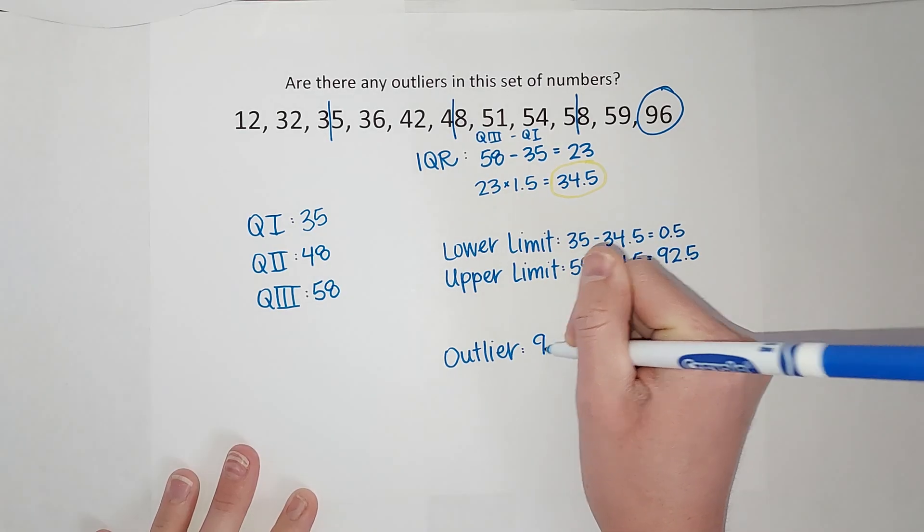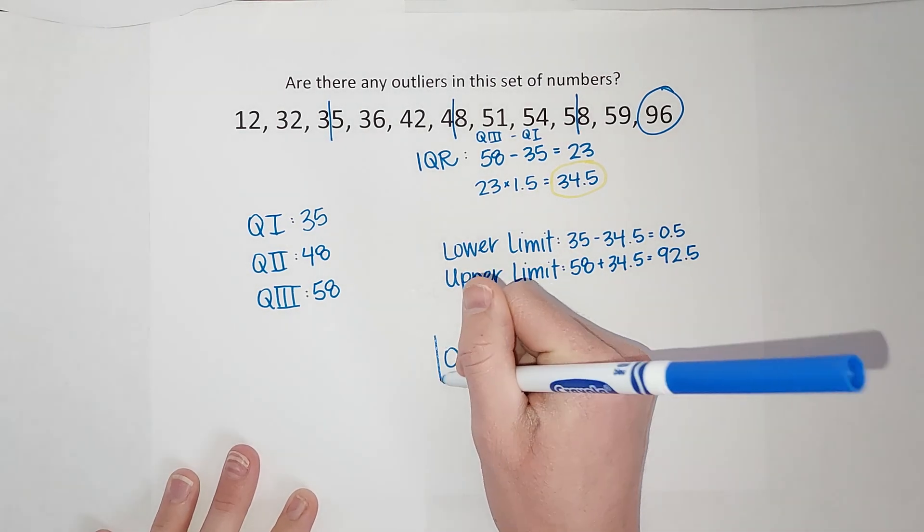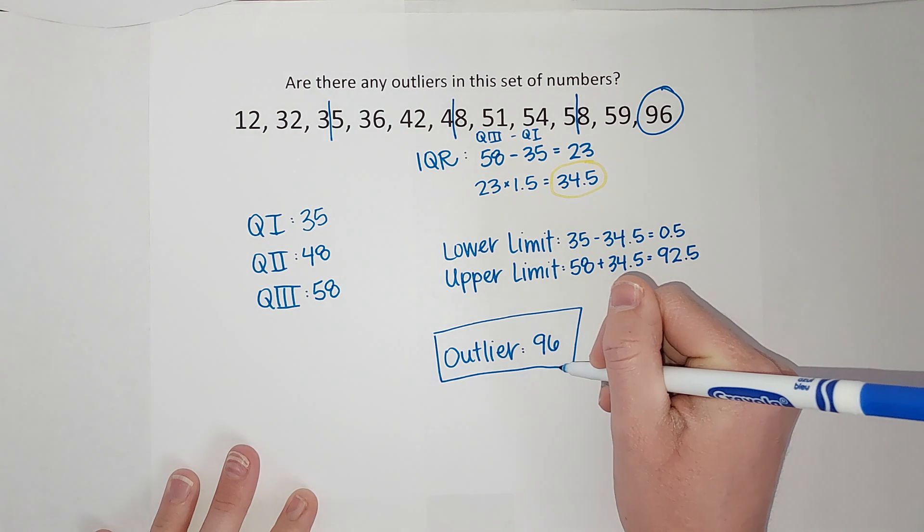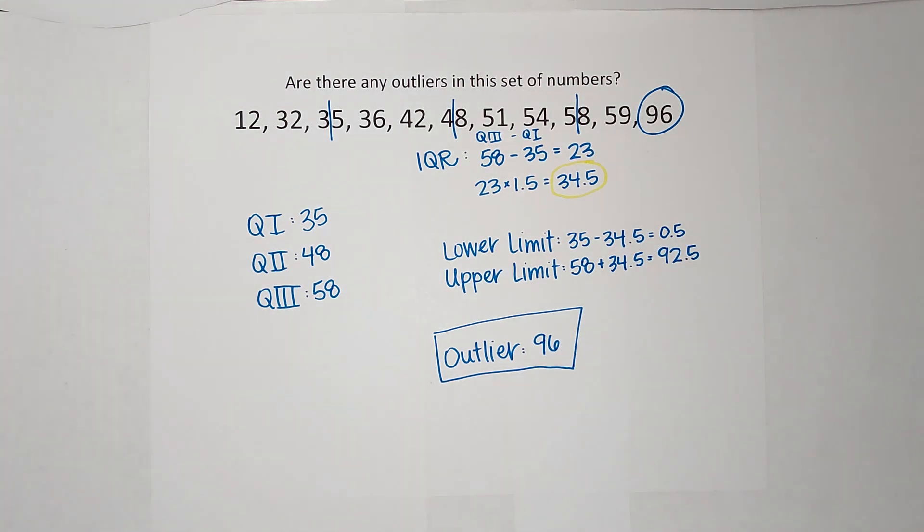So that is how you find outliers. Now, if you are going to make a box plot out of this, you label the outlier with an asterisk. And if you need a video about that, I will link a playlist that has those for you. All right, hopefully that made sense. Thanks, bye!